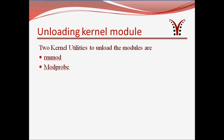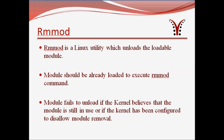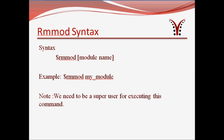Our third topic is unloading kernel modules. We have two kernel utilities to unload modules: one is rmmod, the other is modprobe. rmmod is a Linux utility which unloads the loadable module. The module should already be loaded to execute the rmmod command. The module fails to unload if the kernel believes it is still in use or if the kernel has been configured to disallow module removal. The syntax is: rmmod my_module — without the .ko extension. We need to be a super user for executing this command as well.